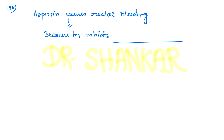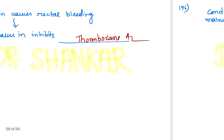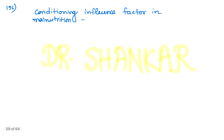Question number 195: aspirin causes rectal bleeding — this is a straightforward clinical scenario question. Aspirin inhibits thromboxane A2, and that is the correct answer. This was a very easy question and likely answered correctly by most candidates.